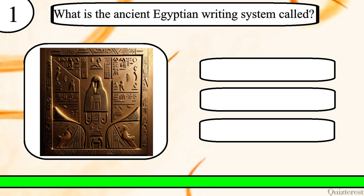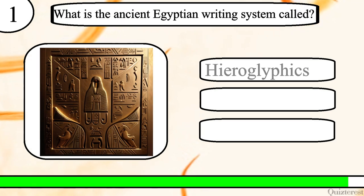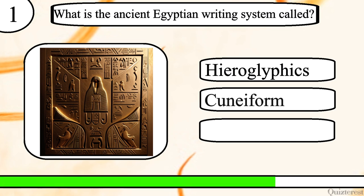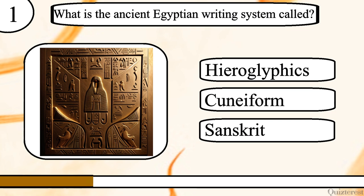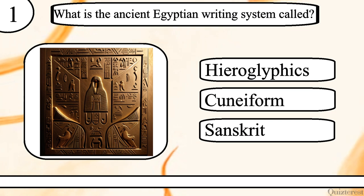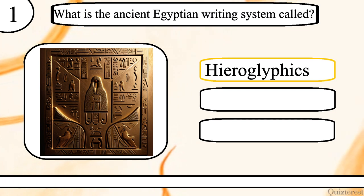Question 1. What is the ancient Egyptian writing system called? Hieroglyphics, cuneiform or Sanskrit? The correct answer is hieroglyphics.